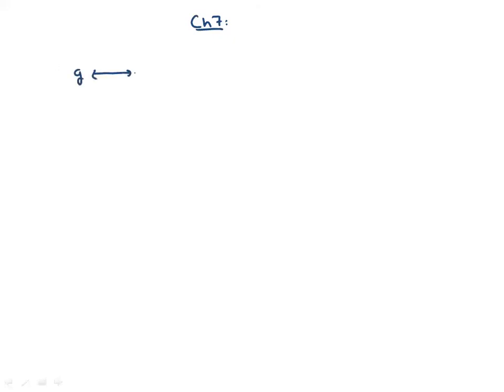Chapter 7 was all about conversions between grams and moles and atoms. Chapter 7 is just kind of a tiny little prequel to Chapter 9 — in Chapter 7, we just did the problems to convert them, and then in Chapter 9, we used those conversions in real problems. We've also used them in Chapter 15 for doing titrations, and you need grams per mole to do colligative properties and things.